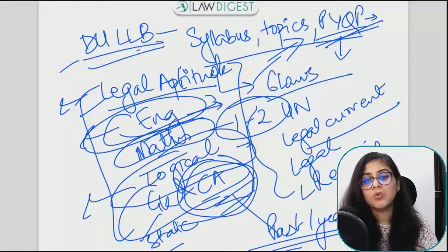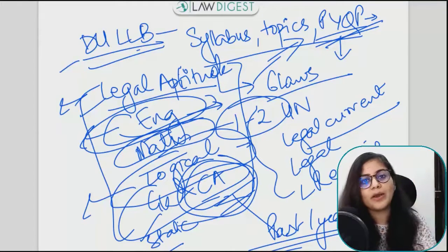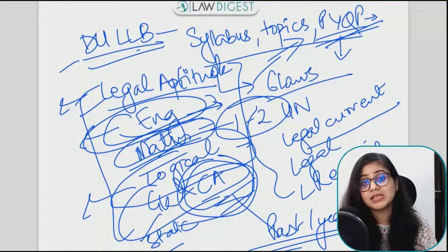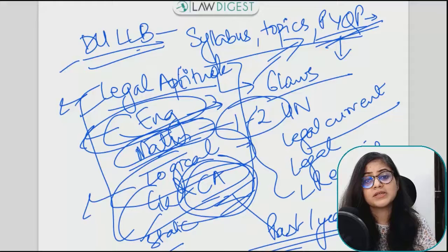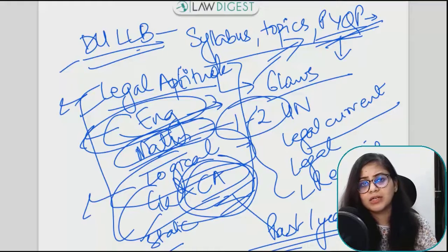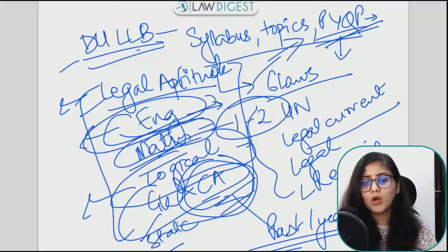For English, I would recommend Wren and Martin — it is a good book for grammar. For Reading Comprehension, you can practice online. For Maths, use your NCERT books from 6th to 10th — go through them once to cover all the topics. For Logical Reasoning, I would say R.S. Aggarwal's Verbal and Non-Verbal Reasoning — you can use that book for this part.